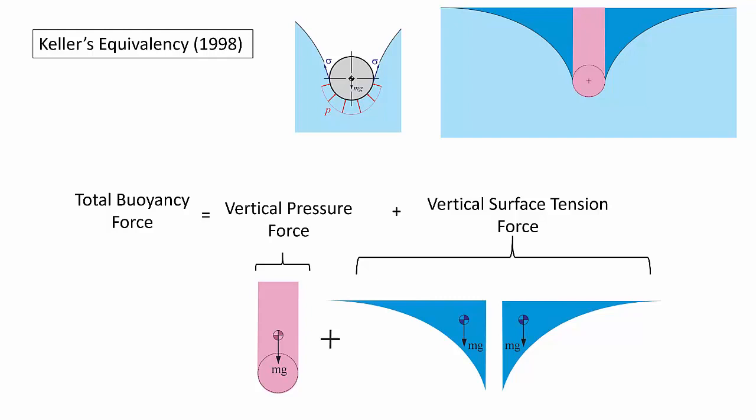This is an important effect for small floating objects where the volume of the meniscus is a significant portion of the total volume of displaced liquid. And I think it makes intuitive sense that the vertical surface tension force is equal to the weight of the water displaced by the meniscus because it's this force that pulls the water down creating the meniscus. And now Keller has provided a formal mathematical proof.